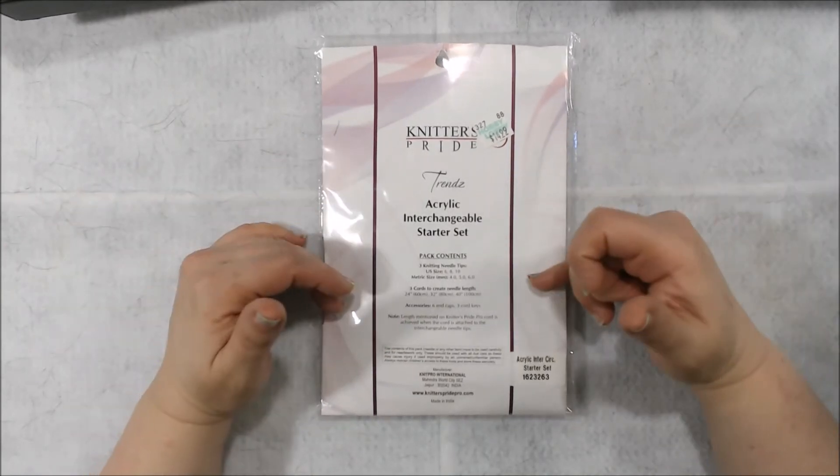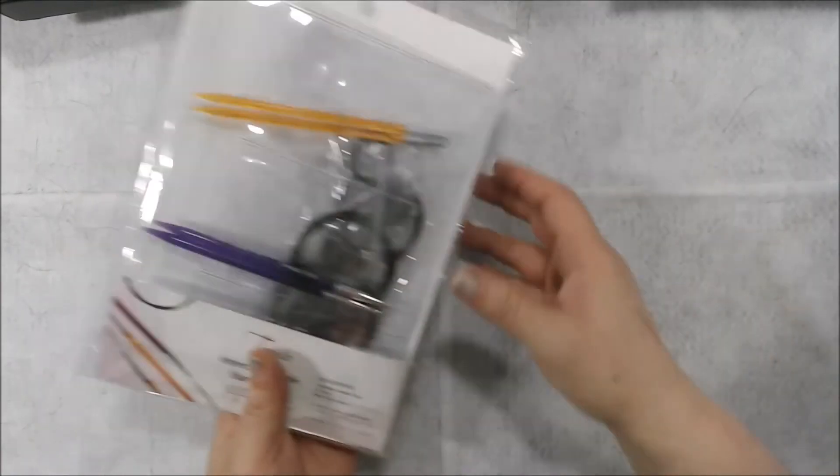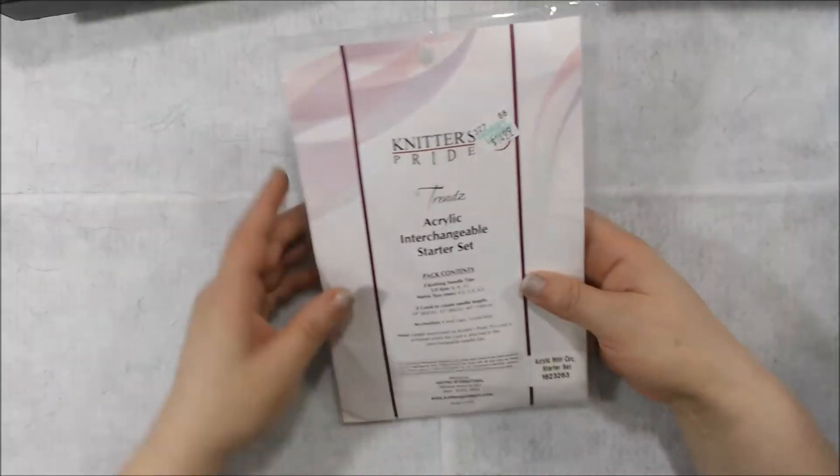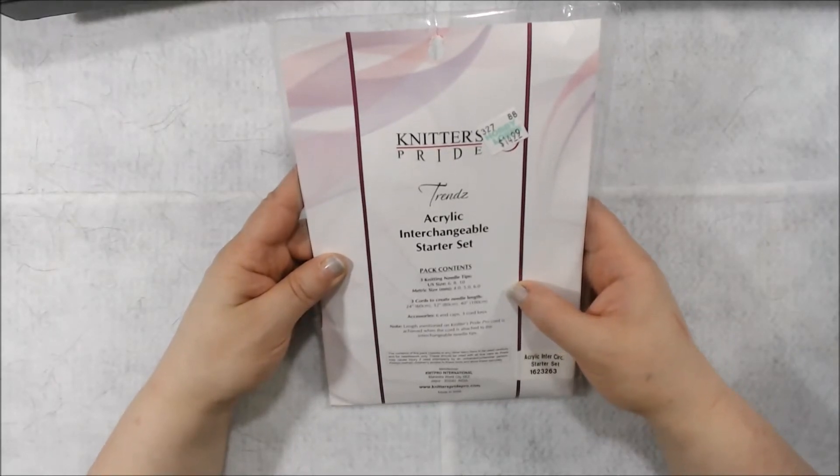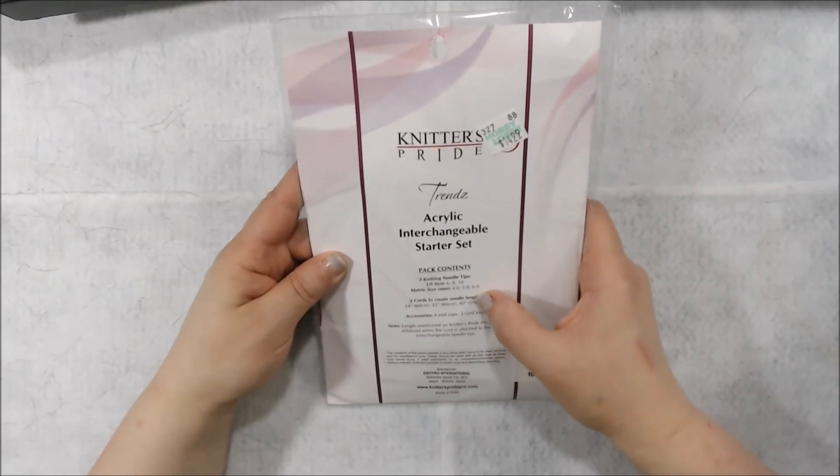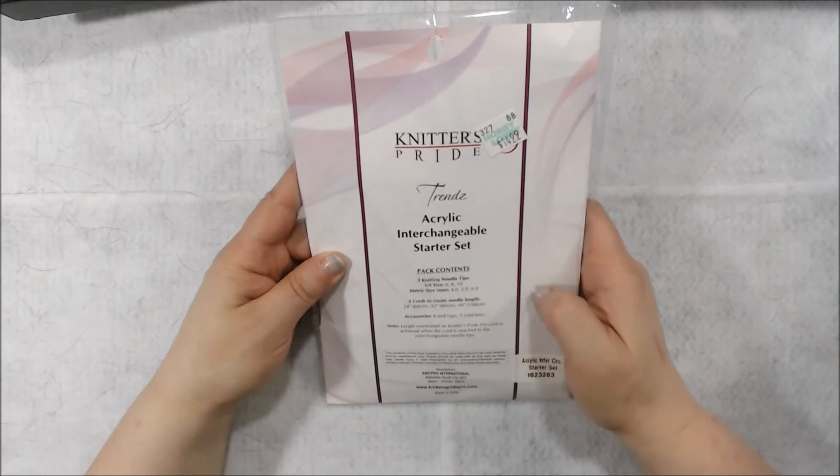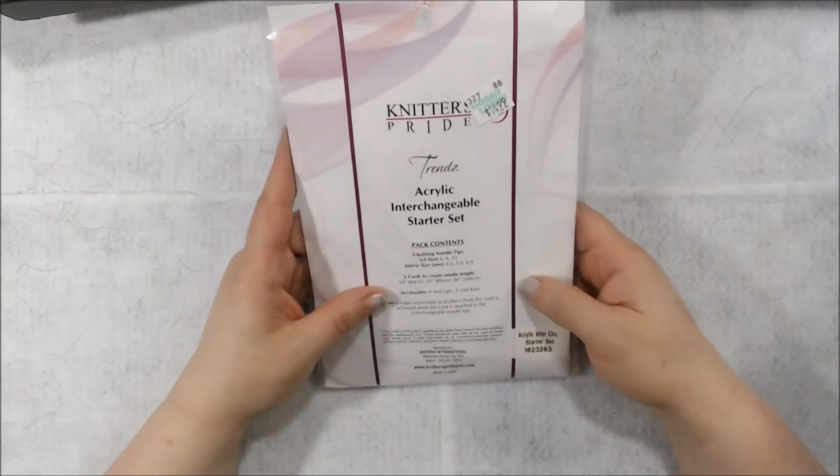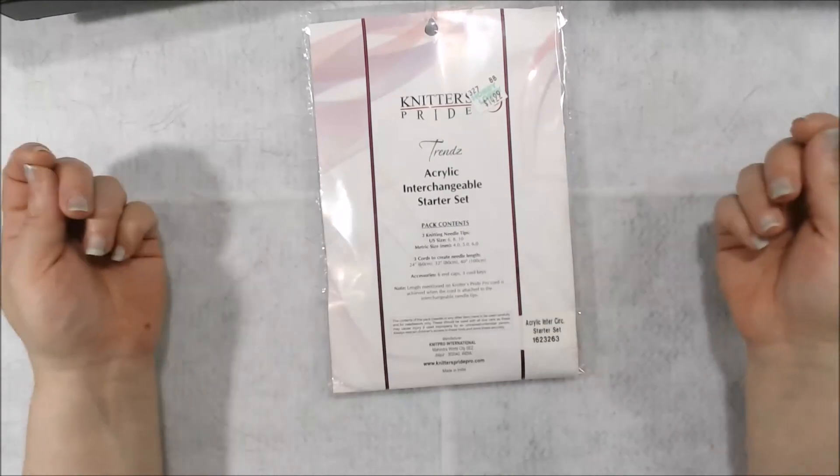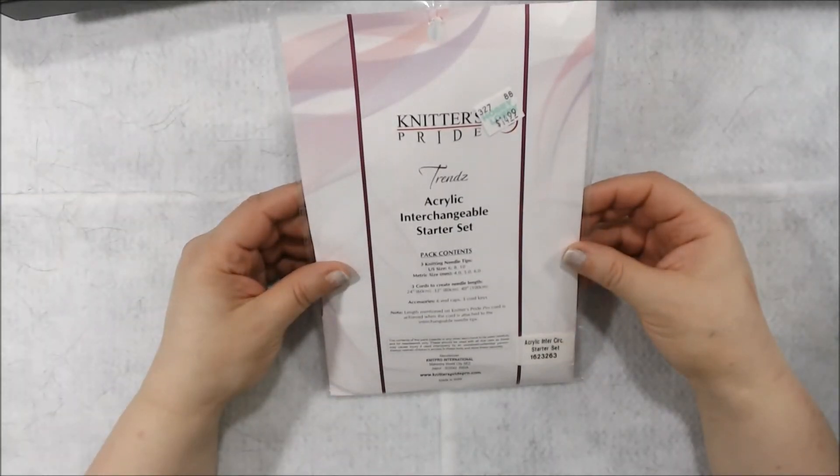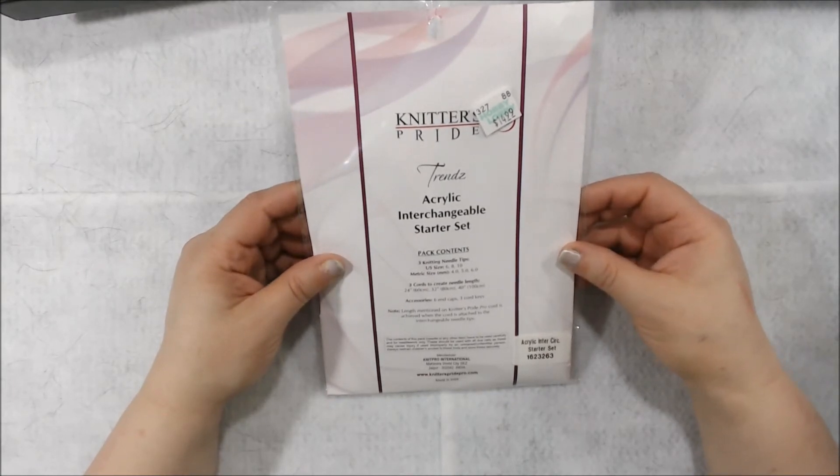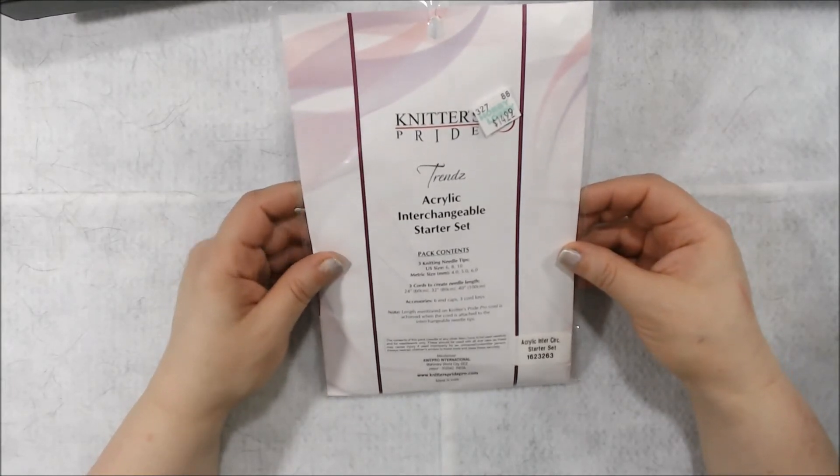This set includes three needle tips. You see two of them here. And the sizes, the U.S. size is 6, 8, 10. The metric size for if you're metric, 4, 5, 6. And the cord lengths, because these are cords, are 24 inches or 60 centimeters, 32 inches or 80 centimeters, or 40 inches and 100 centimeters.